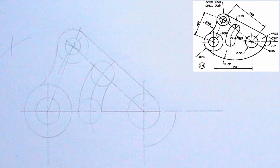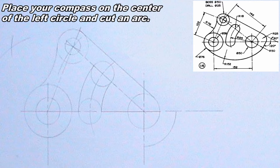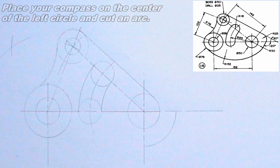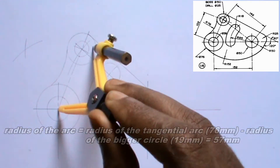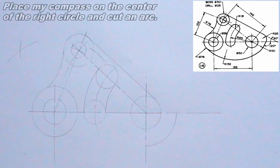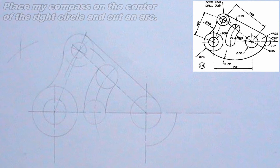Now it is time to produce the lower tangential arc. To produce it, I will place my compass on the center of the left circle, then cut an arc of radius equal to the tangential arc radius minus the radius of the bigger circle — that is 76mm minus 12.5mm. I will also place my compass on the center of the right circle, then cut an arc of radius equal to the tangential arc radius minus the radius of the right bigger circle — that is 76mm minus 12.5mm, which equals 63.5mm.